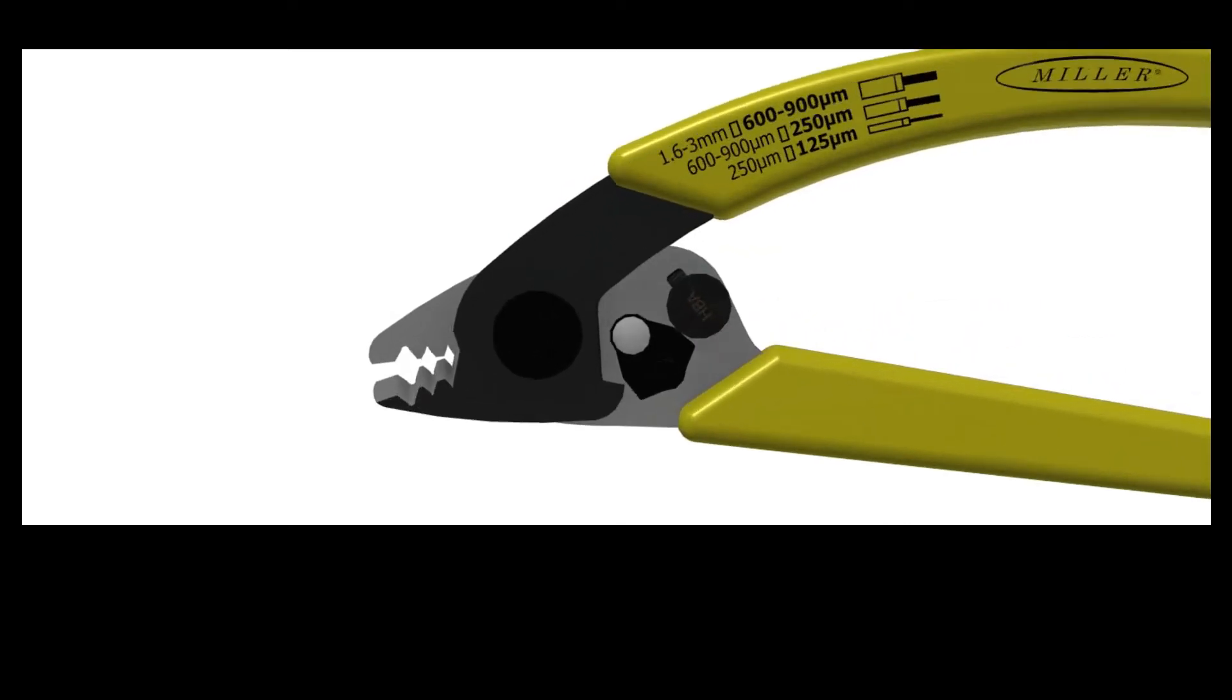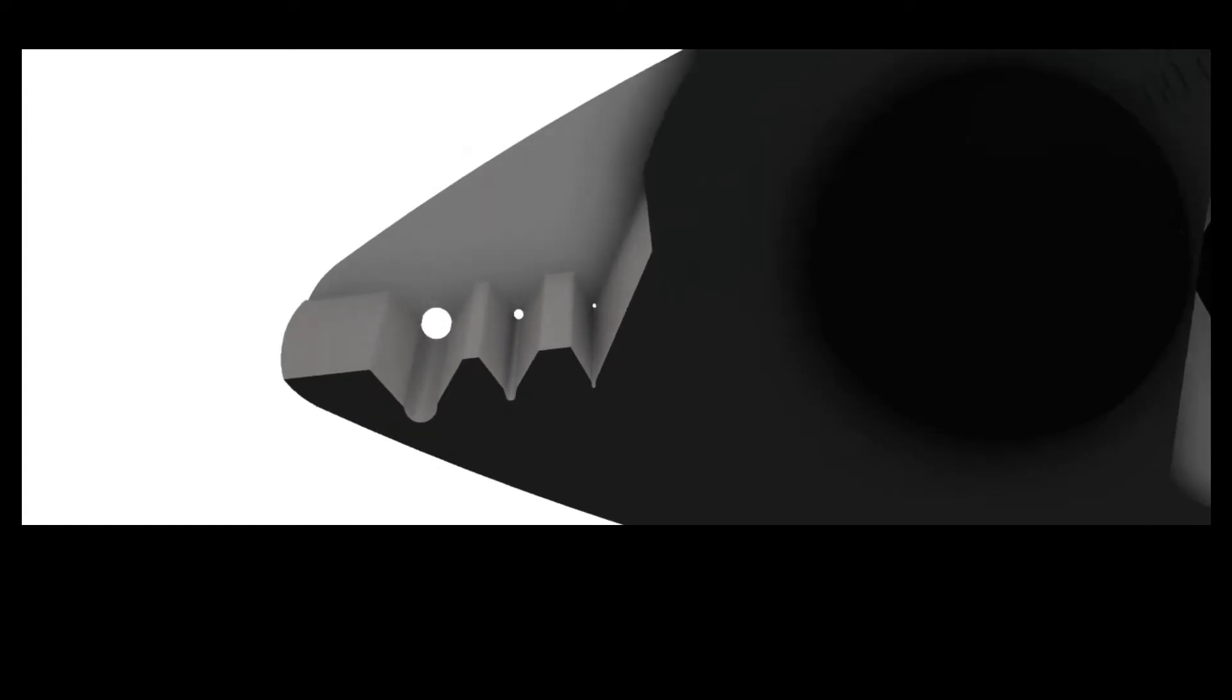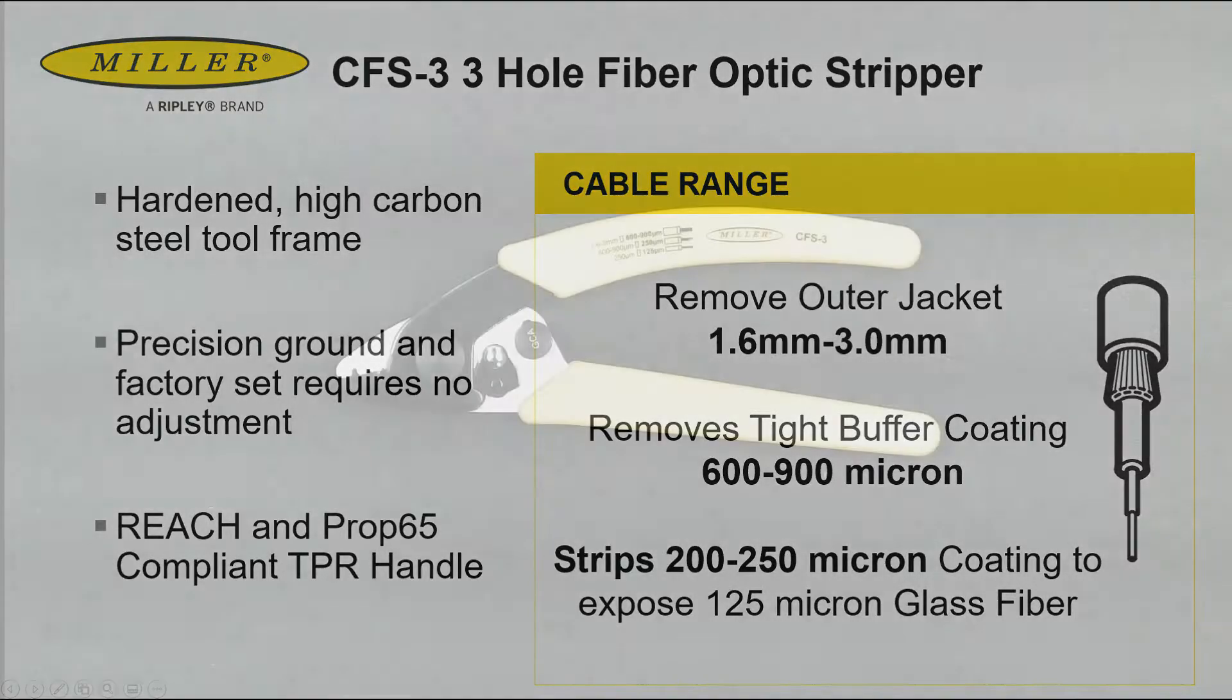The CFS performs all common fiber stripping functions, removing 1.6 to 3mm jacket, 600 to 900 tight micron buffer, and removes 200 to 250 coating to expose the glass fiber.